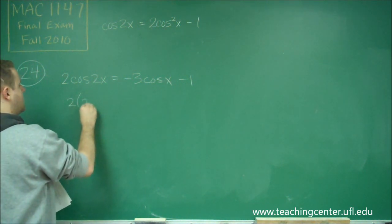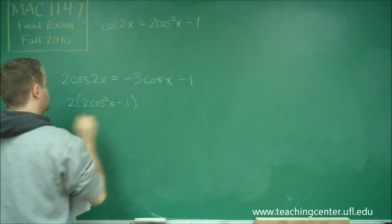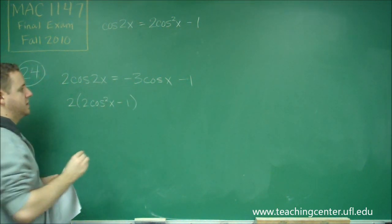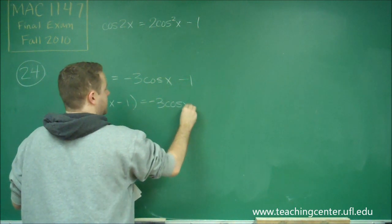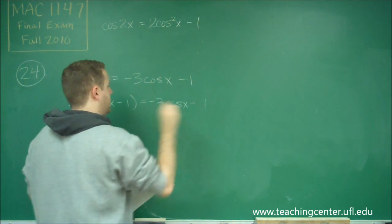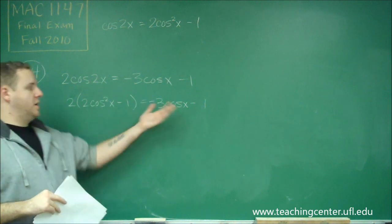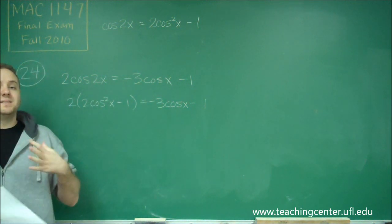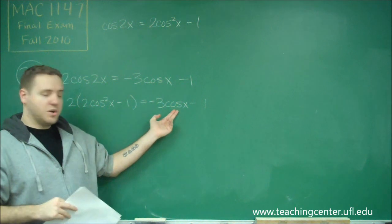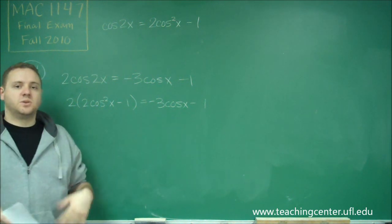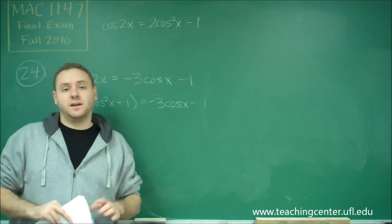We get 2 times (2 cosine squared x minus 1), and we leave the right side the same. Now we want to distribute and get everything onto one side, because now we have a cosine squared and a cosine, so we're going to get a quadratic where cosine is acting like our x.